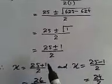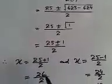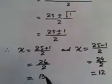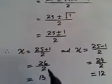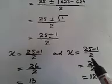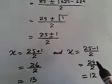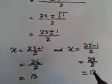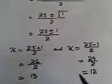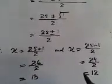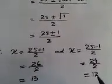When we take 25 plus 1, we get 26 divided by 2, which simplifies to 13. And 25 minus 1 gives 24 divided by 2, which equals 12. So two values of x are obtained: x equals 13 and x equals 12.